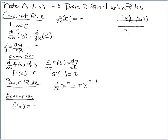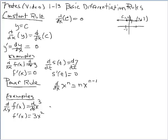Consider the cubic function f(x) equals x cubed. Since this is a power function — base of x with a numeric exponent — we can apply the power rule. The derivative, f prime of x, equals 3 times x, and reducing the exponent 3 by one whole gives us x squared. So f prime of x equals 3x squared. This is the same answer we would have gotten through the long limit process.